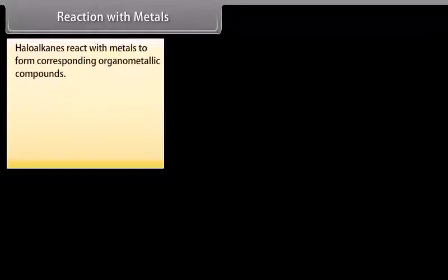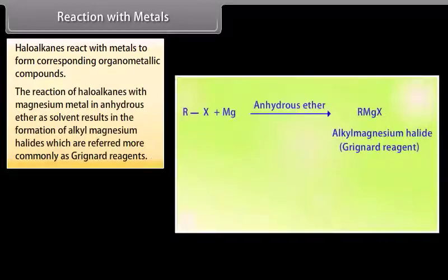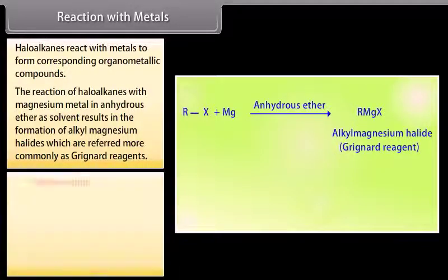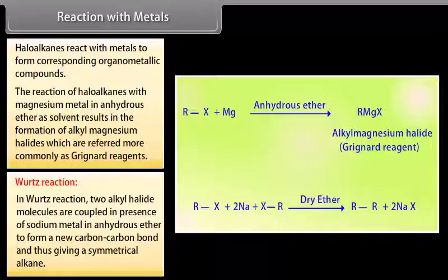Reaction with metals. Haloalkanes react with metals to form corresponding organometallic compounds. The reaction of haloalkanes with magnesium metal in anhydrous ether as solvent results in the formation of alkyl magnesium halides, which are more commonly referred to as Grignard reagents. Wurtz reaction: Two alkyl halide molecules are coupled in presence of sodium metal in anhydrous ether to form a new carbon-carbon bond and thus giving a symmetrical alkane.